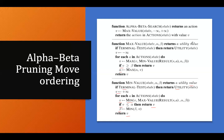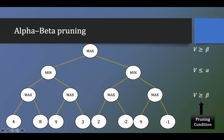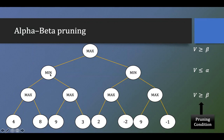Let's understand this algorithm with an example. We have a root node which is a maximizer, then the first level which is a minimizer, then the next level which is a maximizer again — because it is a two-player game where players alternate moves. At the last level we have terminal nodes. The pruning conditions at each node level are shown, and we will walk through this alpha-beta pruning example in detail.